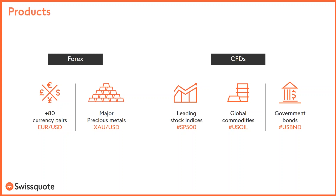You can also trade platinum and palladium, plus other CFDs on commodities like WTI and Brent crude oil, natural gas, and more. You can trade government bonds like US, UK, and German bonds as CFDs with leverage effect. The most liquid CFDs are the leading stock indices, like the S&P 500, the Dow Jones, the Nasdaq, the DAX 30, the Eurostoxx 50, the FTSE 100, and much more.